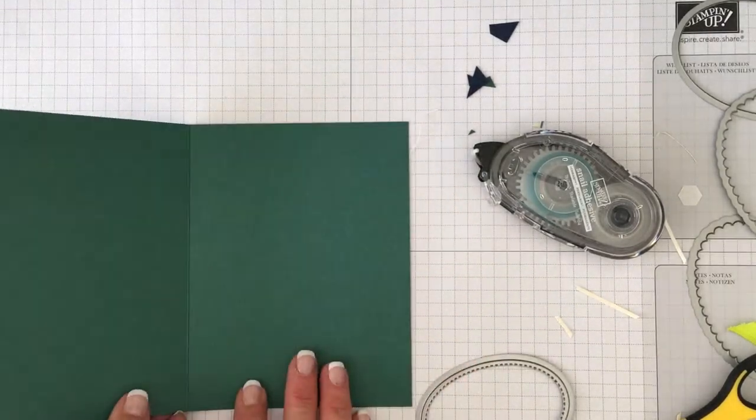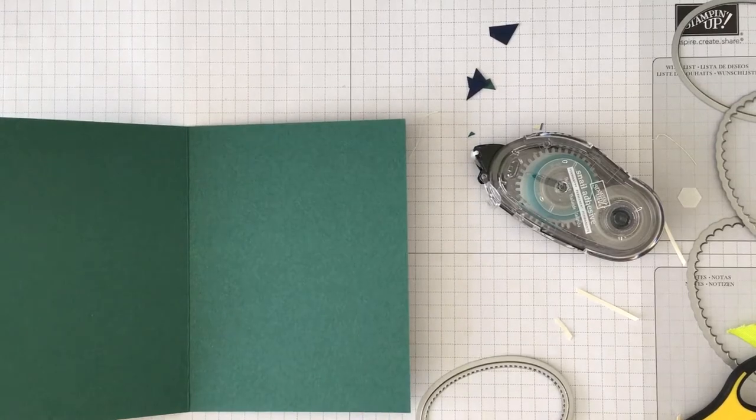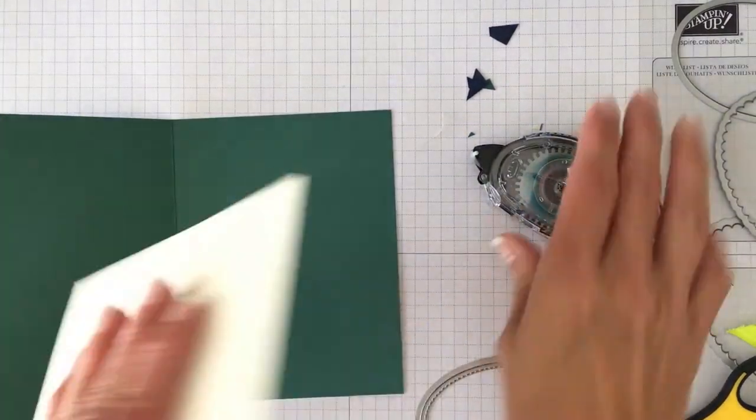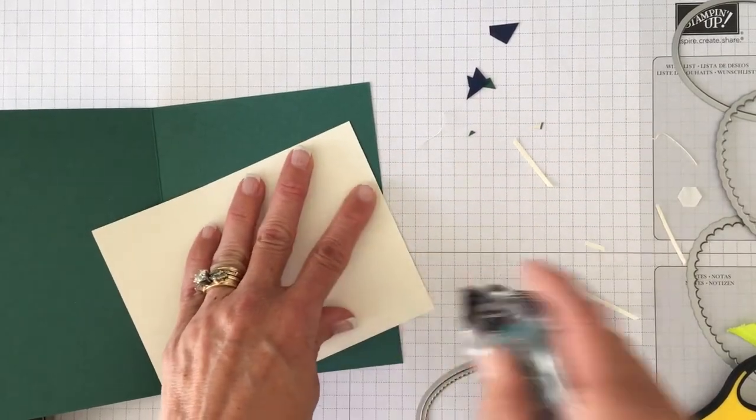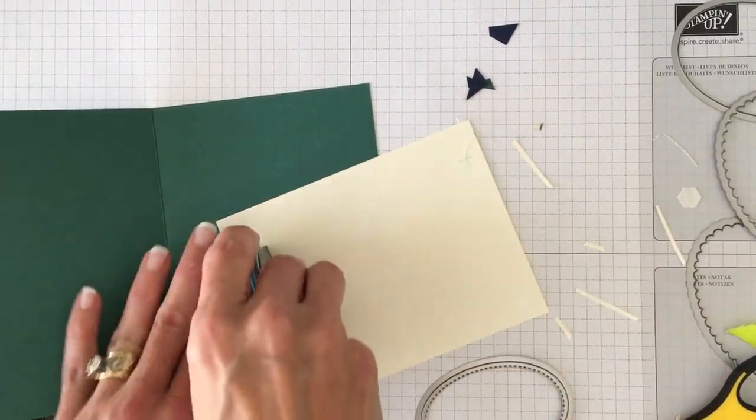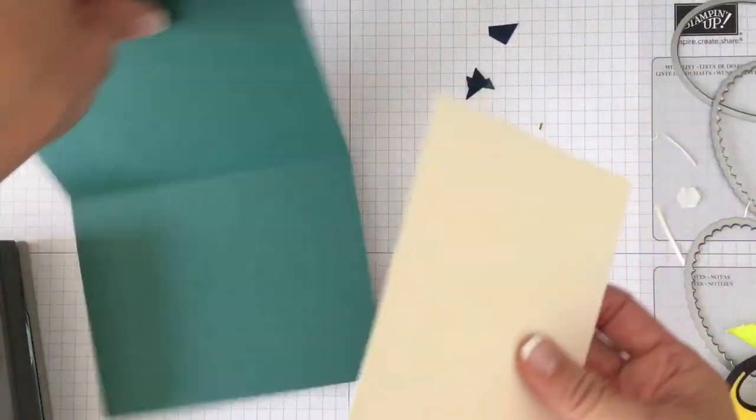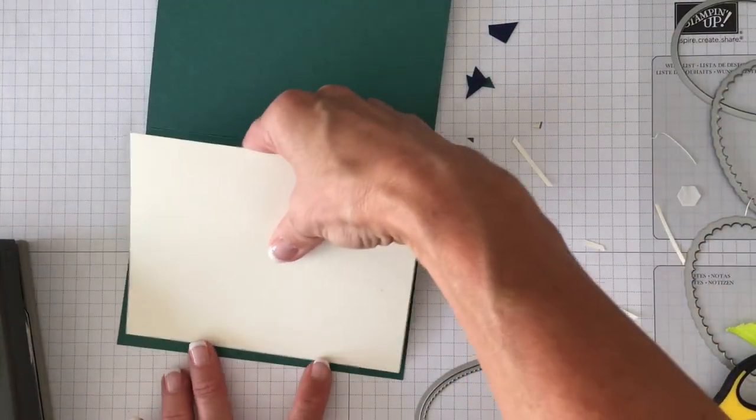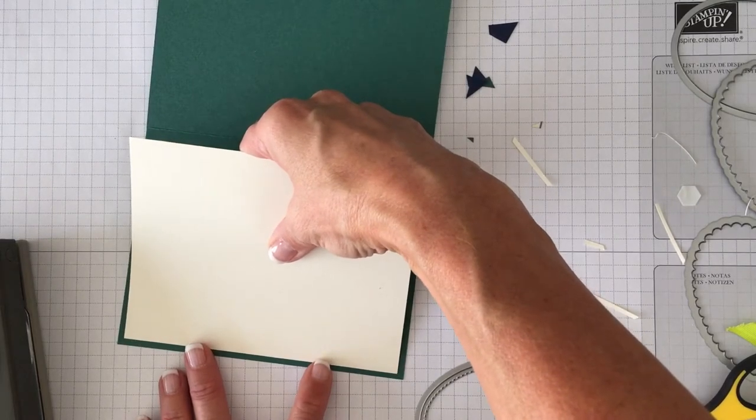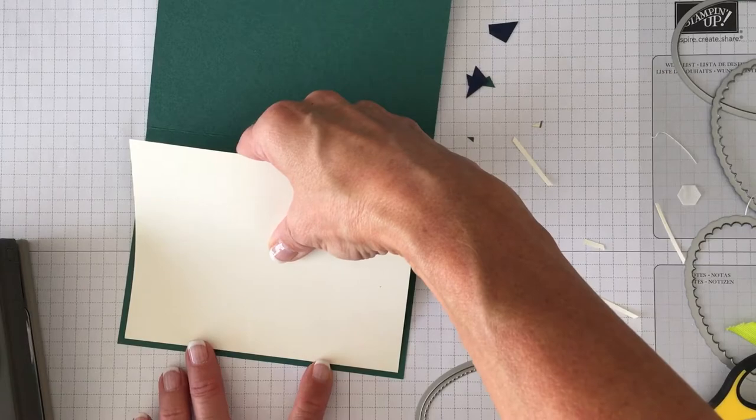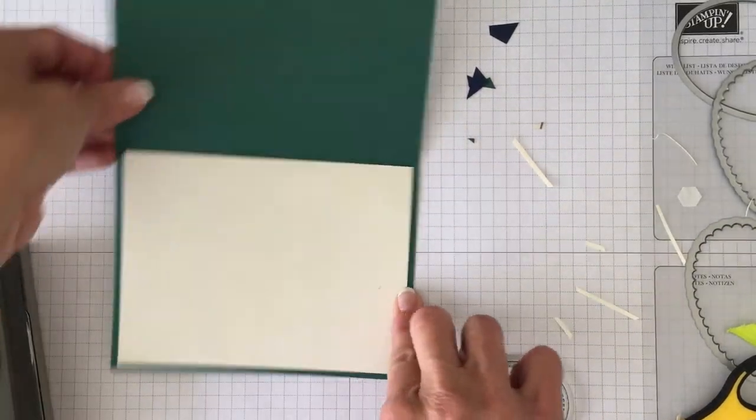So now we're going to do the inside of the card. And what I did for the inside of the card is I had a piece of Very Vanilla and it's four by five and a quarter. Again you'll find your measurements on my blog. And then I just took and I made sure I had an eighth of an inch border around all sides and put that on the inside.